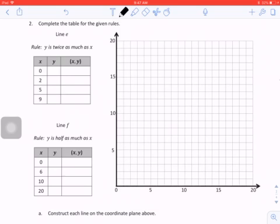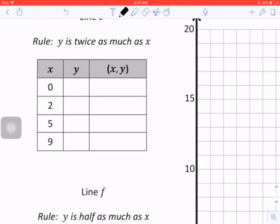Rule: y is twice as much as x, so we're going to multiply our x times 2. So 0 times 2 is 0, 2 times 2 is 4, that's a crazy-looking 4, 5 times 2 is 10, 9 times 2 is 18.